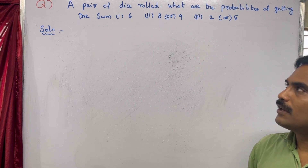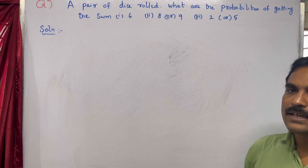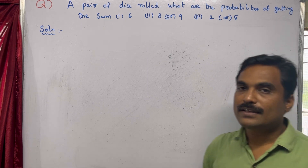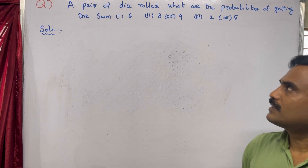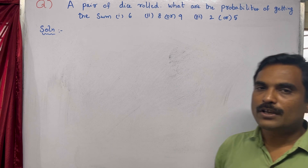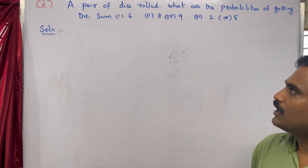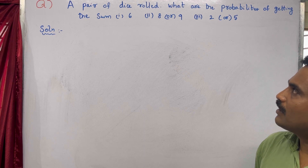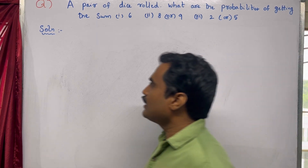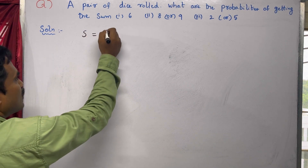Since they have given a pair of dice, that means you are rolling two dice. First you need to find the sample space. They are asking us to find the probability of getting the sum 6 — that is event A, event B as sum of 8 or 9, and third one is event C.